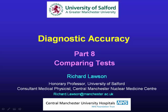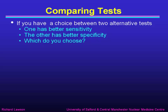For the last part of my talk on diagnostic accuracy, I'm going to talk about how we can compare different tests. In comparing tests, we may be in the situation where we've got a choice between two alternative tests to diagnose a particular disease. One test may have better sensitivity, but the other may have better specificity. So we have the dilemma: which do we choose? It's not clear whether in any particular situation we're better off with high sensitivity or with high specificity.